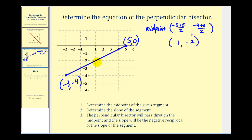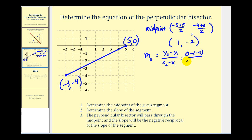Next, we determine the slope of the segment, because the slope of the perpendicular bisector is going to be the negative reciprocal. Using the slope formula, y₂ minus y₁ divided by x₂ minus x₁, we'll call the first point the ones and the second the twos. So we have zero minus negative four over five minus negative three, which gives us positive four over positive eight. The slope of the segment is positive one-half.